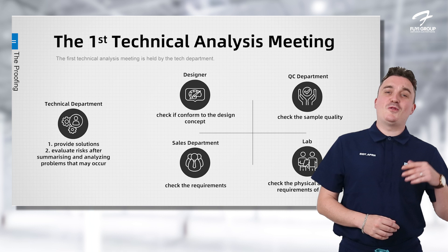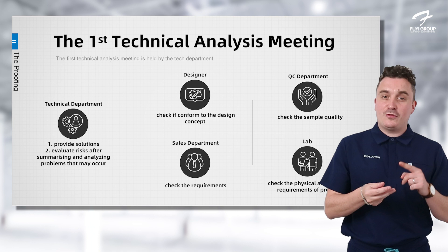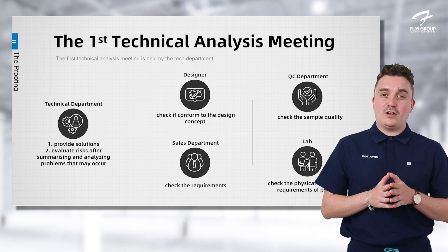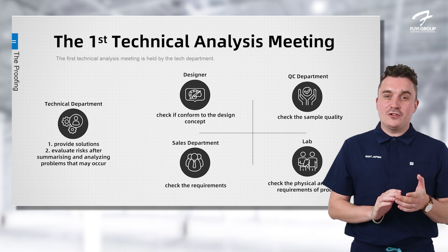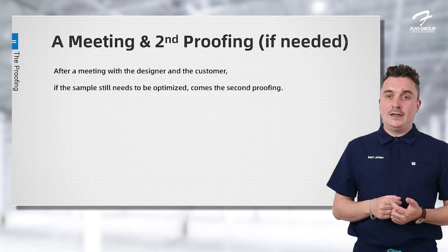After the fitting, we move to an internal meeting with all major departments involved in producing your scrubs — design, QC, sales, and technical departments — all meeting to discuss the products you want, how we can make them, and getting them to you on time. After this, our designer will meet with you to see if the product fits and is what you want. If anything needs changing, we'll go through the process again for a second proofing to get the product 100% perfect for you.